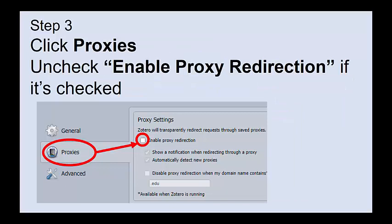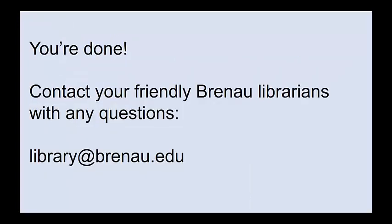Step three: look on the left side of the screen and click the word 'Proxies.' Then look for the words 'Enable Proxy Redirection.' If there is a check mark next to the words 'Enable Proxy Redirection,' click on it to uncheck it. If there was already no check mark, then great — leave it alone. The goal is to have no check mark next to the words 'Enable Proxy Redirection.'